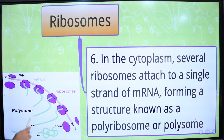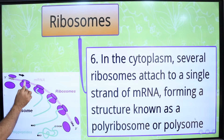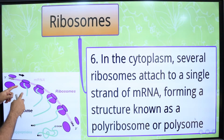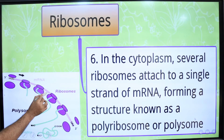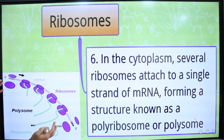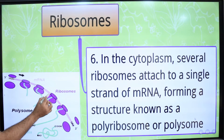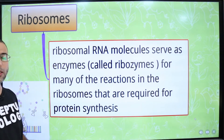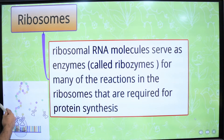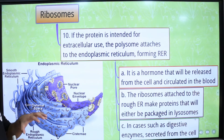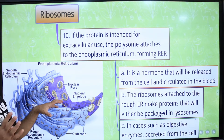In the cytoplasm, the small subunit binds with the mRNA molecule, and then the large subunit binds with the small subunit to form a complete ribosome. The ribosome reads the genetic information present in the mRNA molecule and translates it into a sequence of amino acids in a polypeptide chain. When many ribosomes are attached to a single mRNA molecule, that structure is called a polysome. Ribosomes contain ribosomal RNA, which serves as a ribozyme enzyme during protein synthesis.